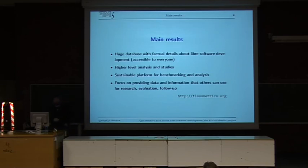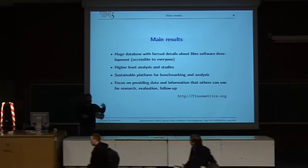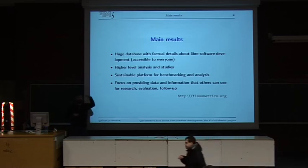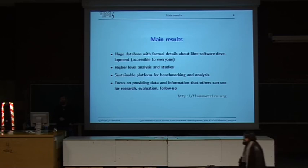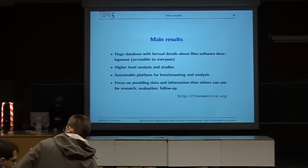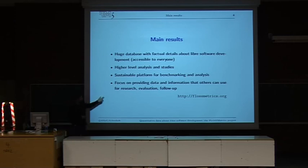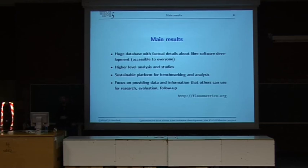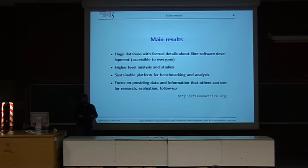Summarizing the main results: a database with factual details — the factual part is quite important because the things we have are facts, so nobody can dispute them. For example, somebody was doing a commit at such and such a date, on such and such a file. Millions of things like that. We are also producing higher-level studies and analyses, which are basically reports that will be public. And a sustainable platform for benchmarking and analysis — all this data will be kept on the service, so anyone wanting to make a benchmarking analysis can come and look for similar projects. Our main focus is on providing data and information so that anyone can come and do their preferred analysis.